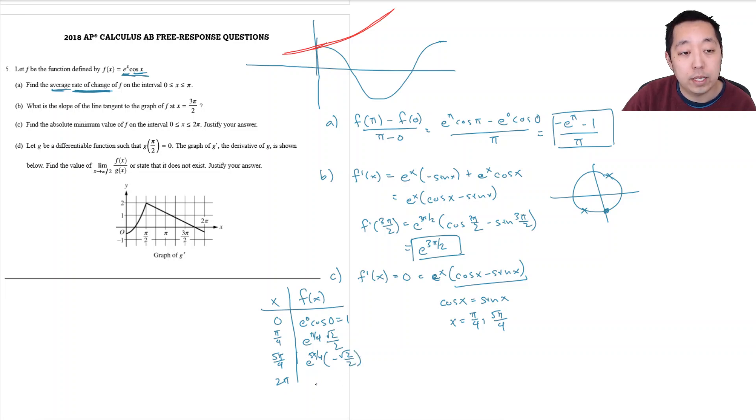And then at 2 pi, it's e to the 2 pi, cosine of 2 pi, which is just 1. So this is the only one here that's negative. So this negative root 2 over 2, e to the 5 pi over 4, is the minimum value because all of these are all positive values.